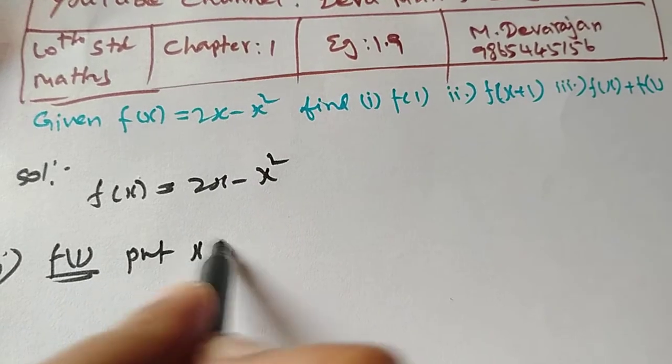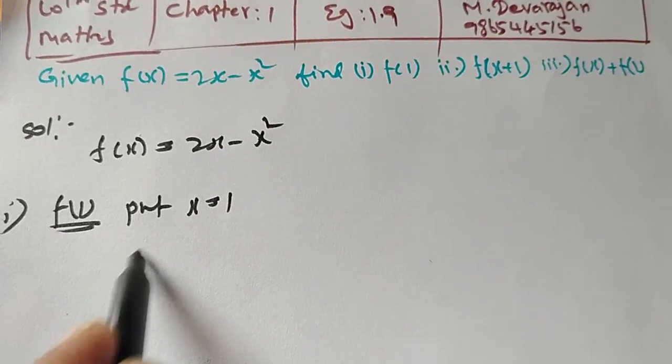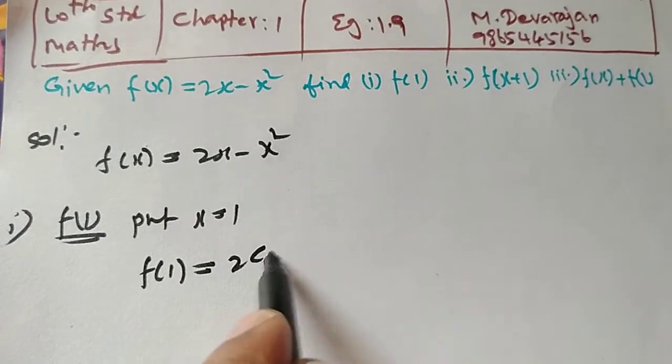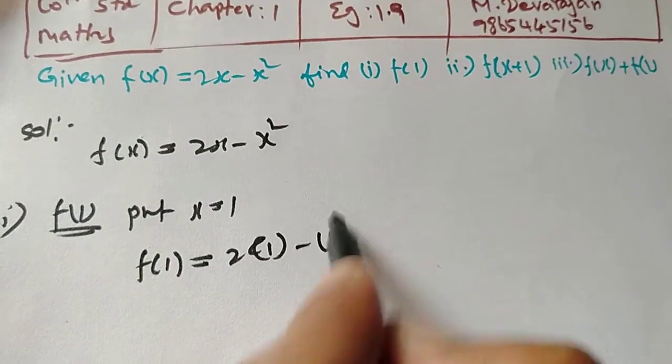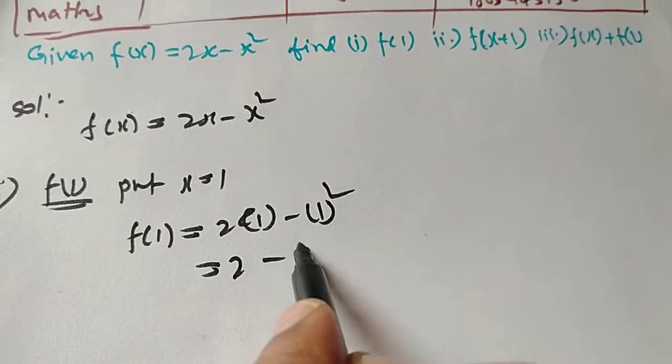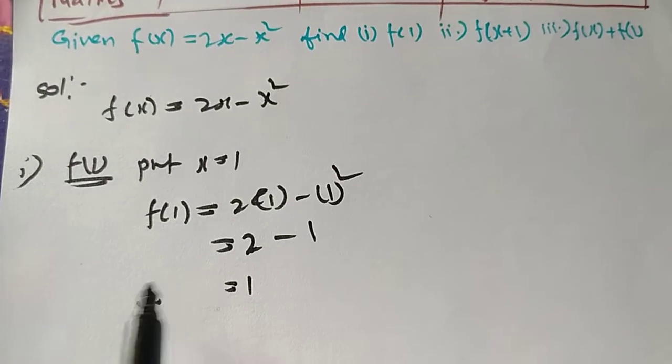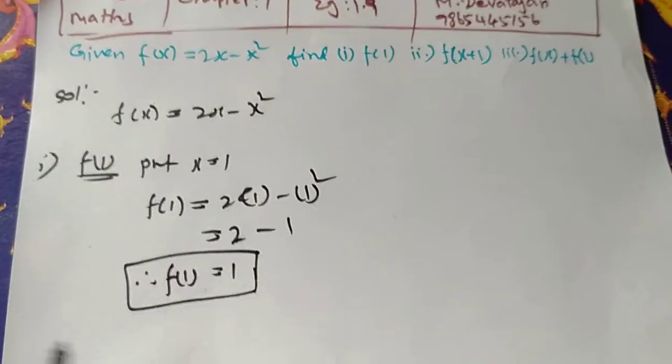Put x equal to 1 in the given function. So f of 1 equal to 2 into 1 minus 1 square, 2 ones are 2 minus 1 square is 1. Therefore f of 1 equal to 1.